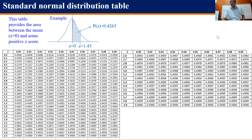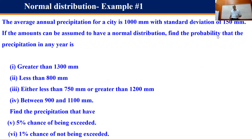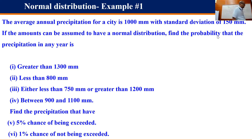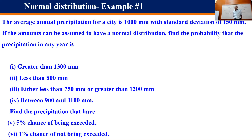Now we solve a problem. The average annual precipitation for a city is 1000 mm and the standard deviation is 150 mm. Let's say this is Bangalore. With 3σ = 450, we can say that 99.7% of the time the rain will lie between 550 mm and 1450 mm, with a mean of 1000 mm.